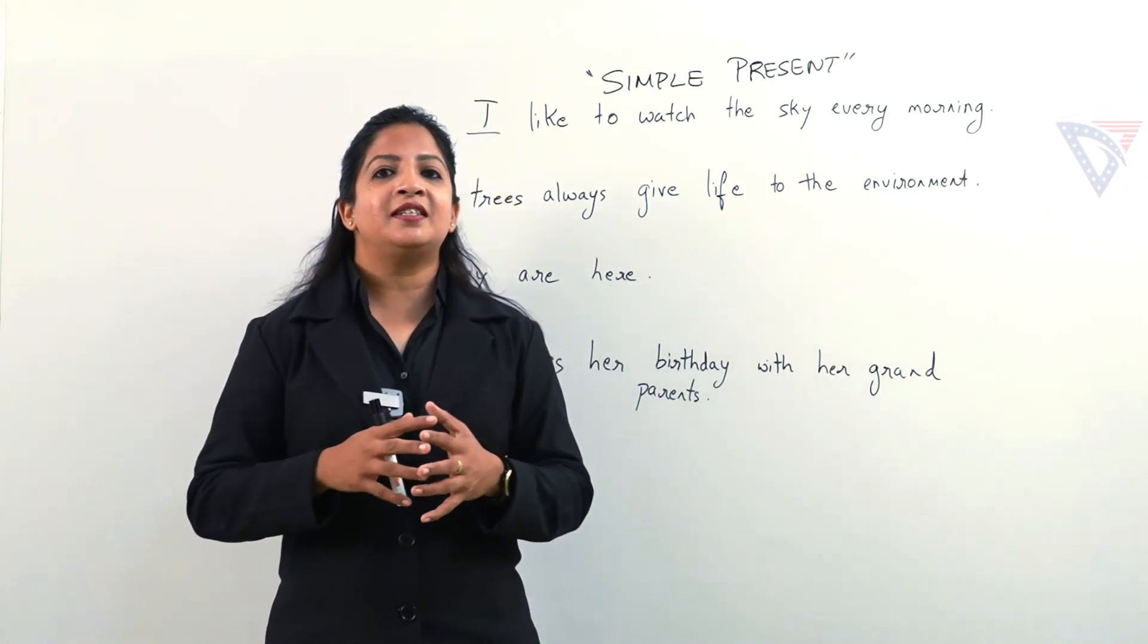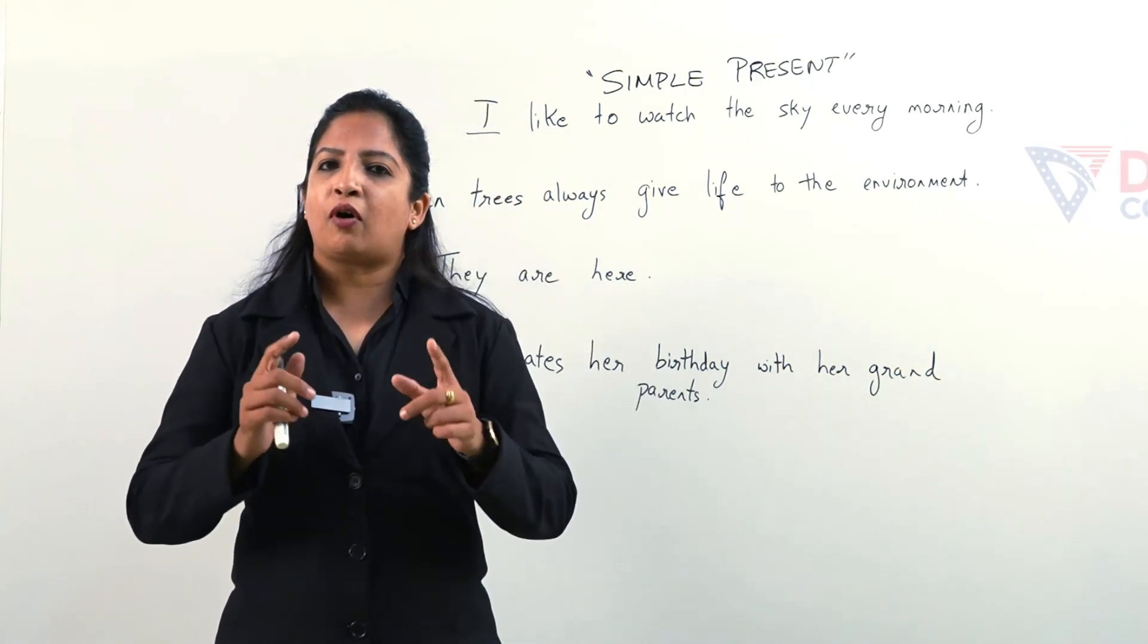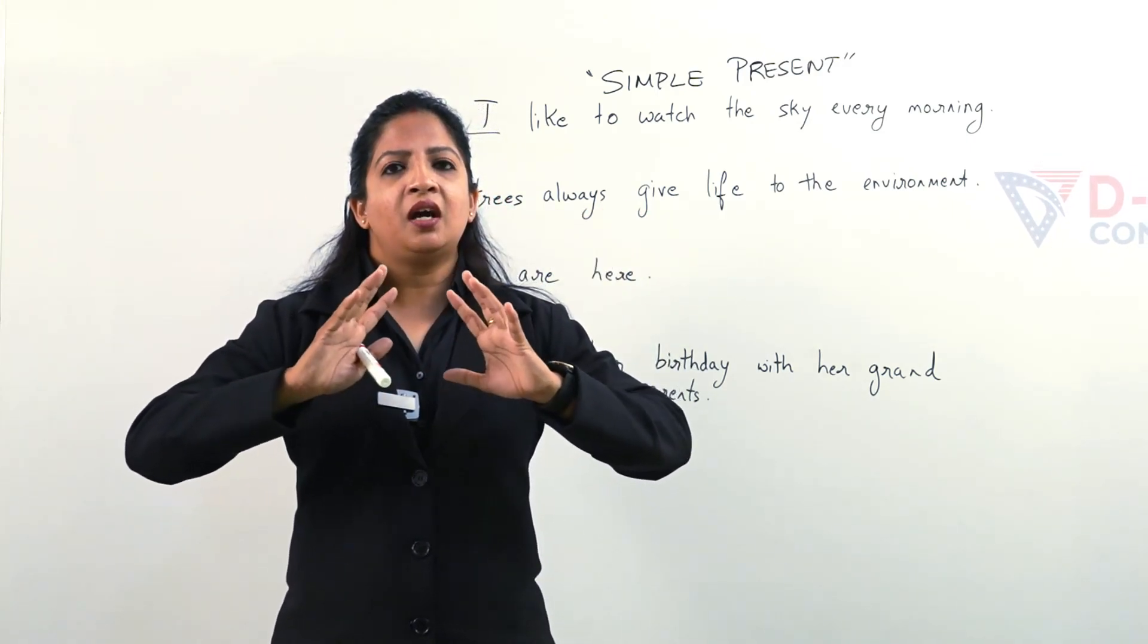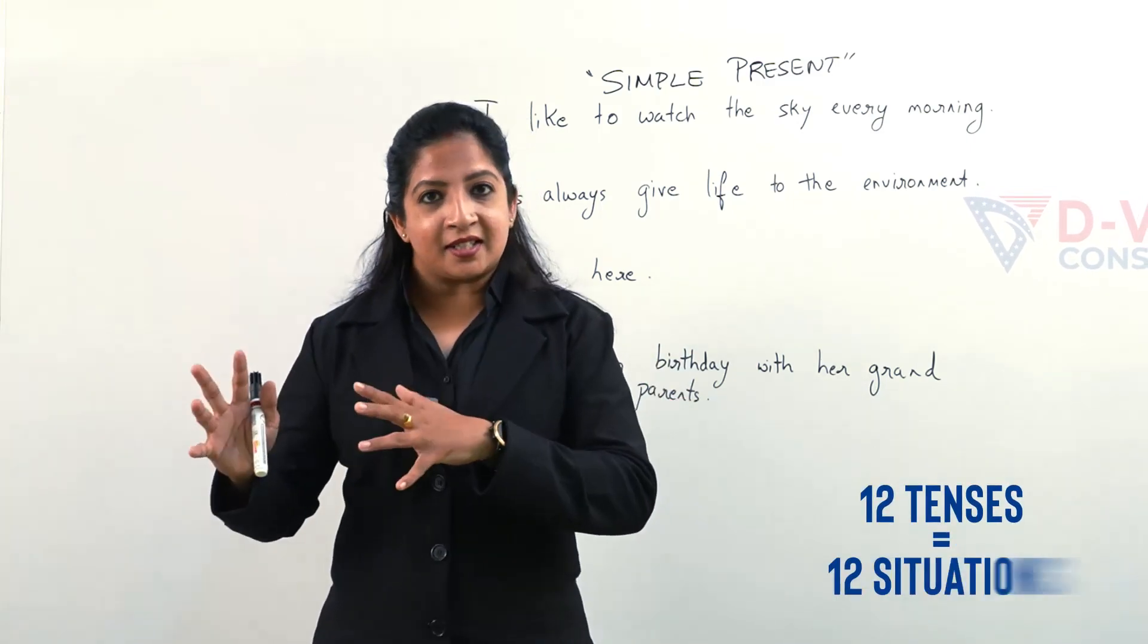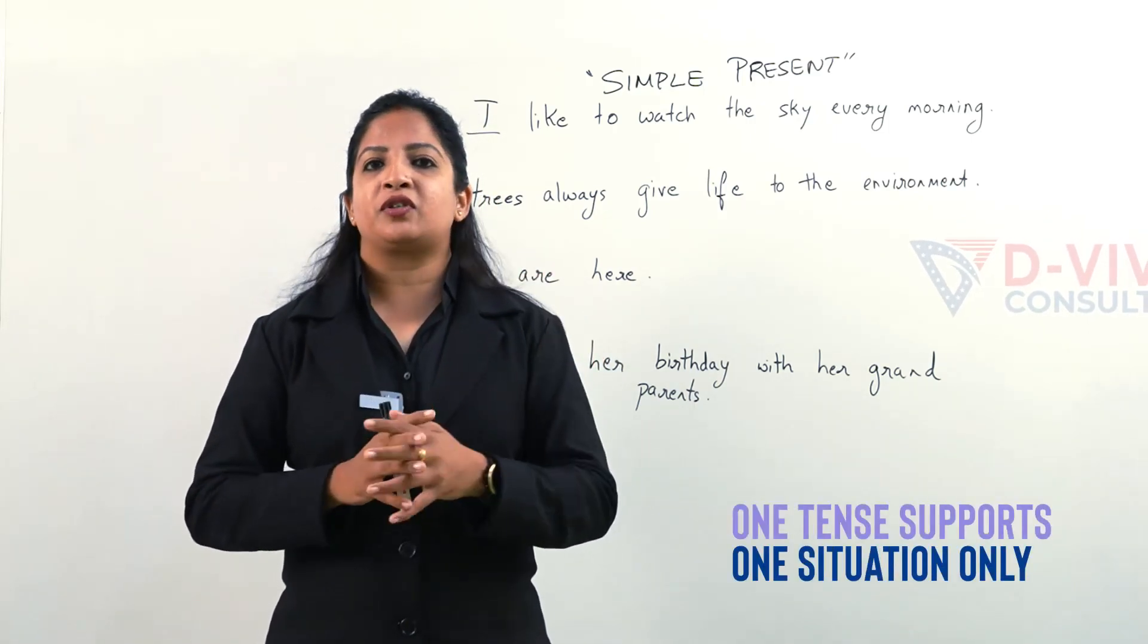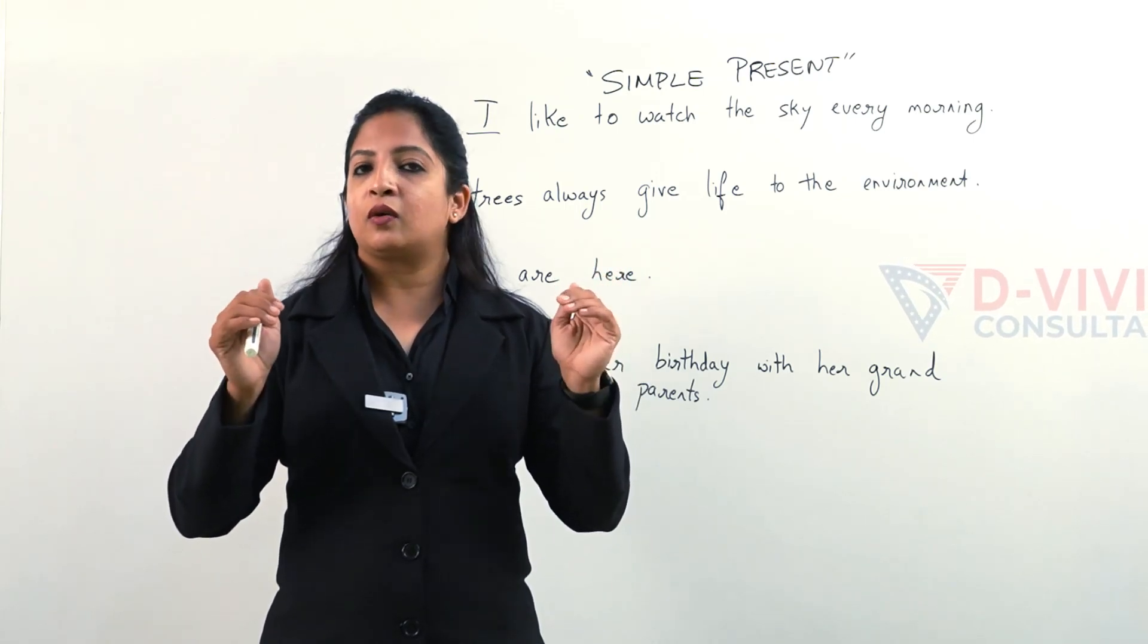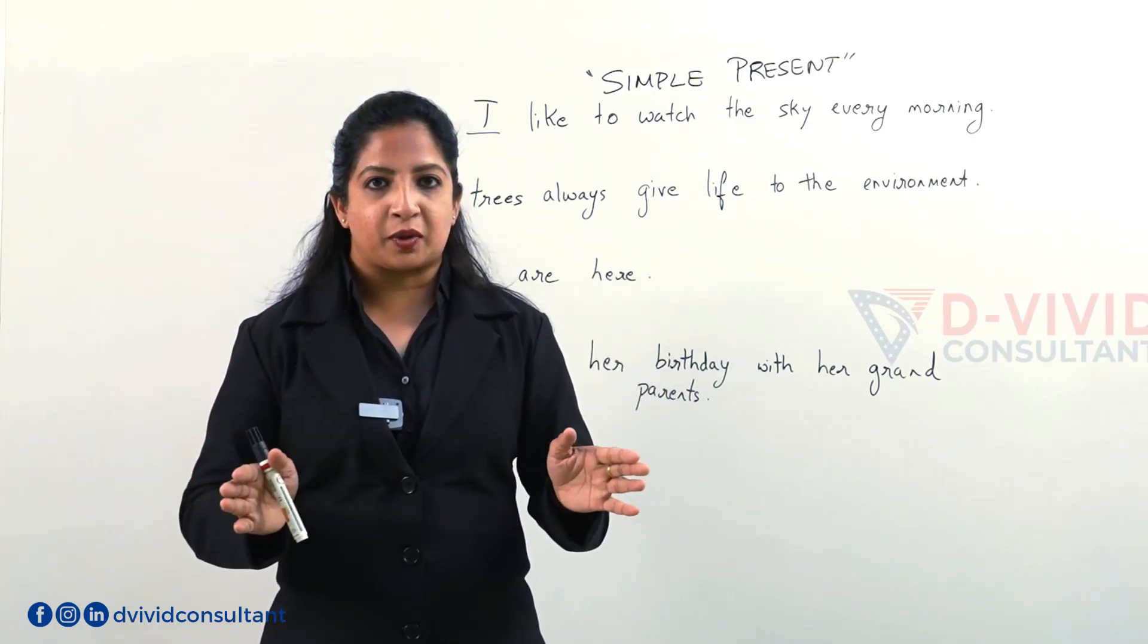When we learn tenses or practice, you should be very careful. First, we all know that there are 12 tenses. So if there are 12 tenses, that means that we have 12 situations. And every tense supports one situation. One tense, one situation. Twelve tenses, twelve situations.